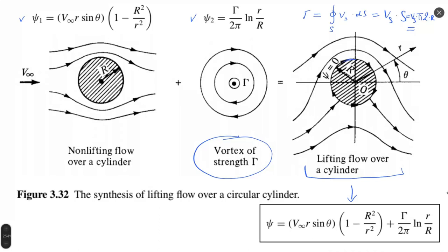Once we have the streamline function, we can set it equal to zero and find the condition at which the surface is located. The location of the surface is where the radial coordinate r equals the cylinder radius R, making both parts of the equation equal zero.